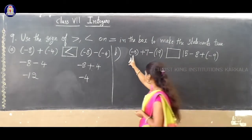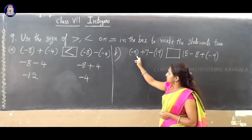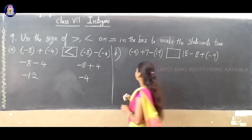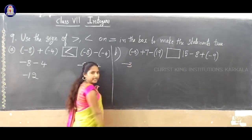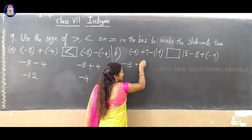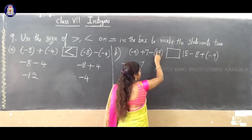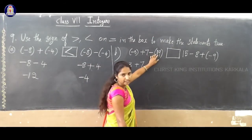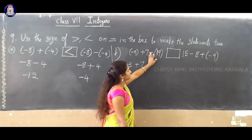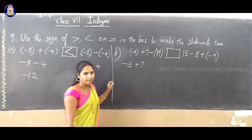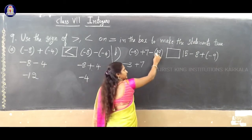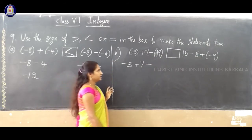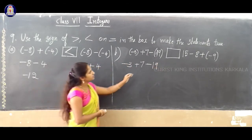Second question: LHS is minus 3 plus 7 minus (plus 19). Simplify: the bracket sign — plus into minus gives minus 19. So we have minus 3 plus 7 minus 19. First, minus 3 plus 7: different signs, subtraction, 7 minus 3 is 4, greater number is 7 with plus sign, so plus 4. Then plus 4 minus 19: different signs, 19 minus 4 is 15, greater number 19 has minus sign, so LHS equals minus 15.